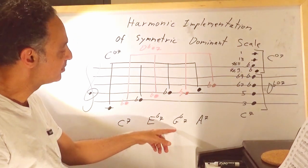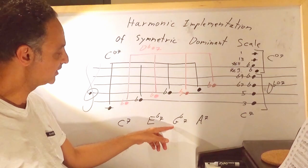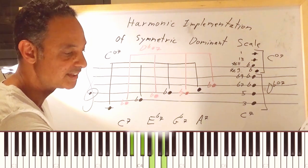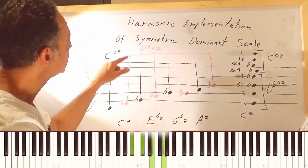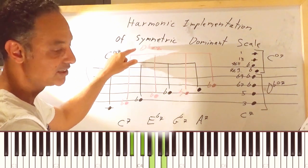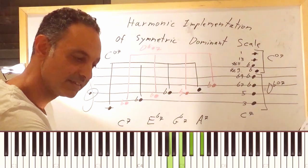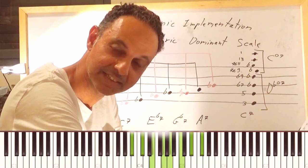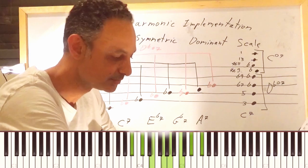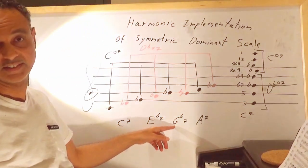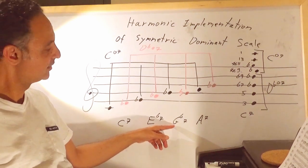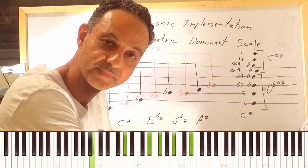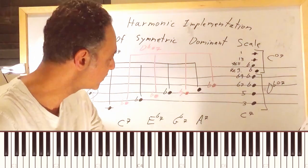Going another minor third up: the third of G flat seven is B flat. Building a diminished seven chord up from B flat gives us the third inversion of the D flat diminished seven chord, and on top of it I add the third inversion of the C diminished seven chord. The G flat seven is the five of C flat, so it resolves to C flat — or to C flat minor.